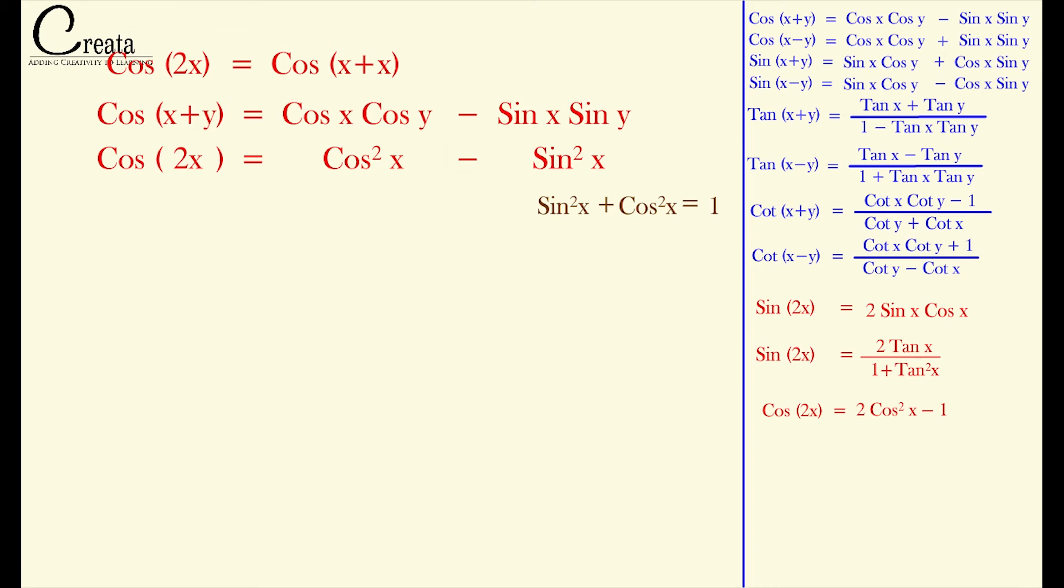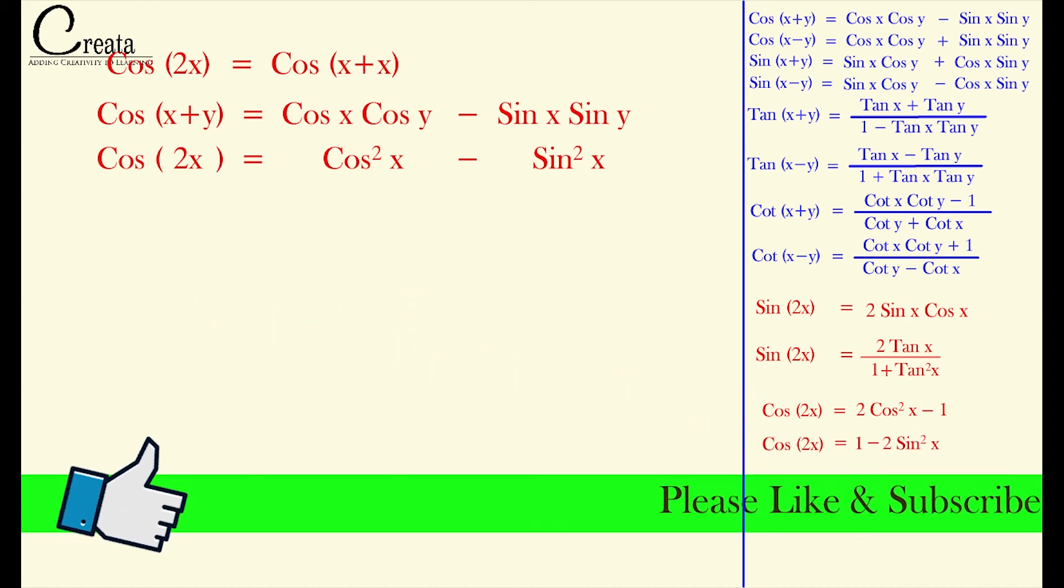Now how to convert this term to sin term? Again same procedure. Applying trigonometric identity to cos²x, just replace cos²x with 1 - sin²x. We will get our formula in sin term. Very easy, simple.